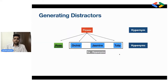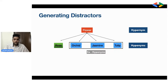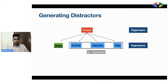Coming to the main piece — generating distractors. Our keyword here is rose, the flower. There is a concept in English called hypernyms and hyponyms. The hypernym of rose is flower. You can think of it as a hierarchy: we go one step above from rose to its hypernym, flower, and then come one step down to the hyponyms of flower, which are orchid, jasmine, tulip, and other flowers. So from a keyword, we go up to the hypernym and then down to get sibling terms — these become our possible distractor options.